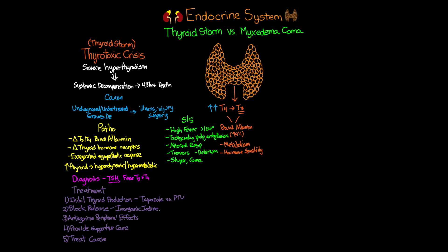Once we're inhibiting production and blocking release, we also want to antagonize the effects of thyroid hormone in the periphery. Because inhibiting production can take days to weeks, we need to block the effects of T3 to minimize organ injury and reduce signs and symptoms of adrenergic stimulation. Studies show beta blockers significantly reduce mortality by as much as 20%. Propranolol is the drug of choice, though esmolol or atenolol can also be used.